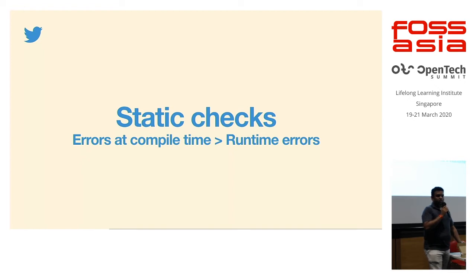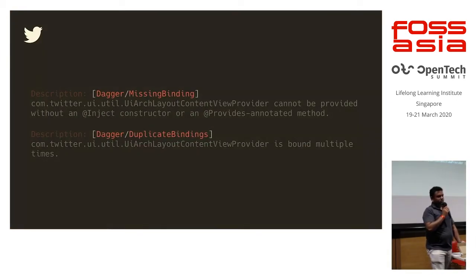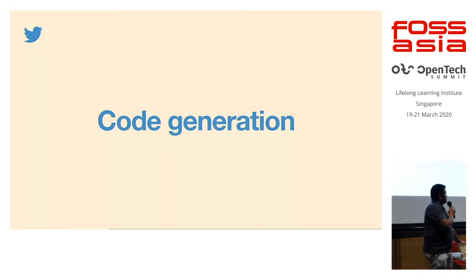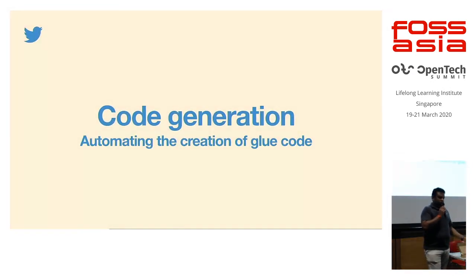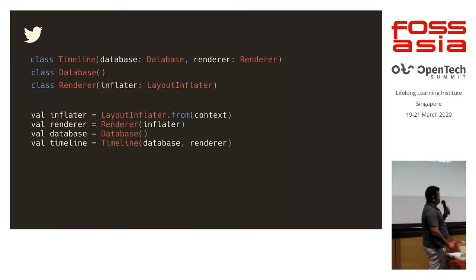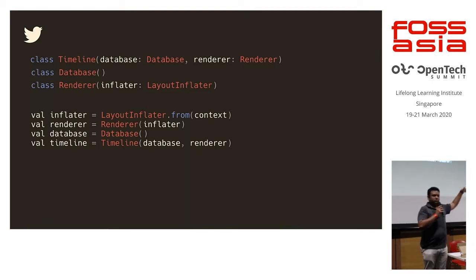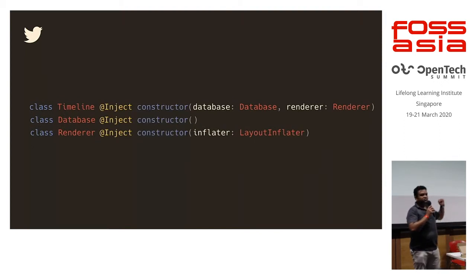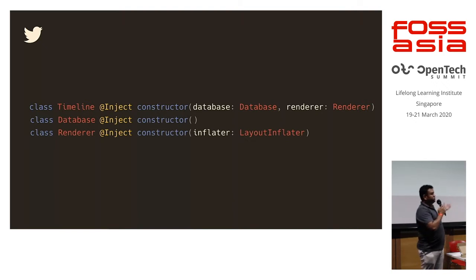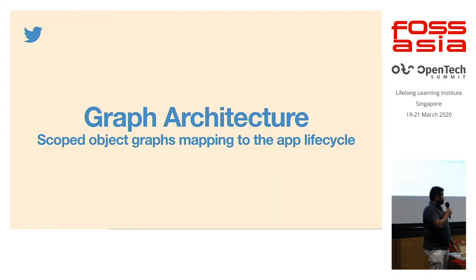Dagger helped us a lot with static checks — anything that errors at compile time is way better than seeing it at the user level. It also helps with code generation, taking care of a lot of the boring boilerplate. For example, instead of manually updating every constructor usage as dependencies change, you just add the @Inject annotation on the constructor and the generated code takes care of it.